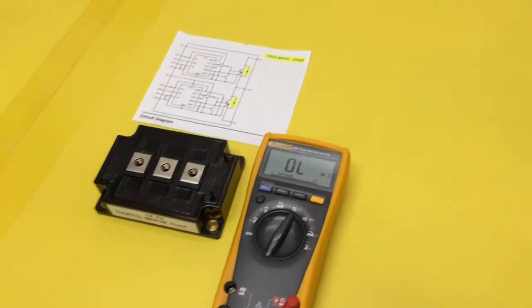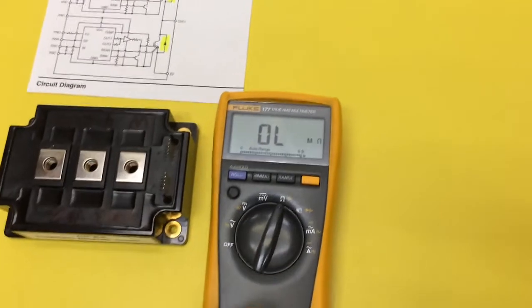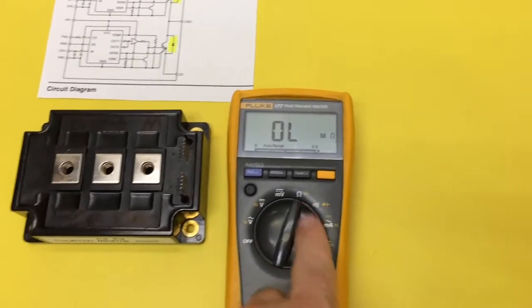So you can do it in diode test mode or ohms. I prefer diode test, but if you don't have that on your meter, you can do it with ohms.